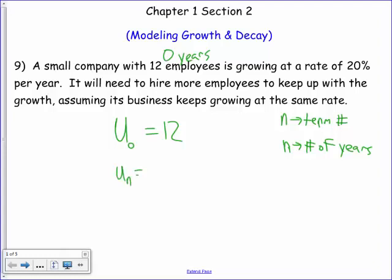I should say u sub n equals. Now this here is a little bit different. Anytime we work with growth and decay, before we write our u sub n minus 1, we're going to take 1 and then plus or minus the rate. Then we'll take that times our u sub n minus 1, our previous term. If I look at 20%, I would write that as a decimal, so 0.2. And since it's growth, I'm going to use addition. So I should say 1 plus 0.2.